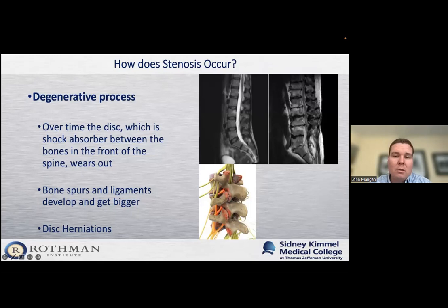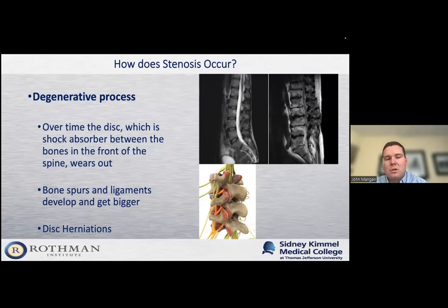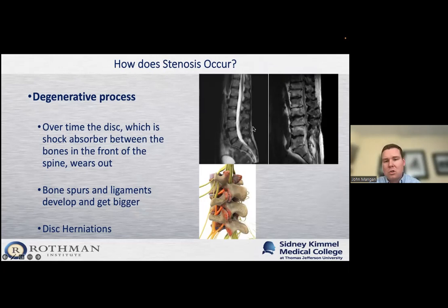You can see how the nice white fluid visible on the left picture is gone — everything looks tight and getting pinched. That's part of the degenerative process where patients develop bone spurs. Additionally, sometimes patients will have a relatively normal looking spine but may have a very large disc herniation. That disc herniation takes up the majority of the room within the canal and patients will present with a bad spinal stenosis.